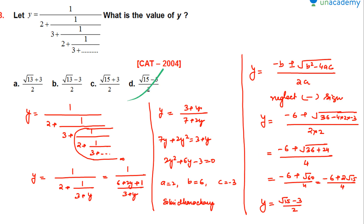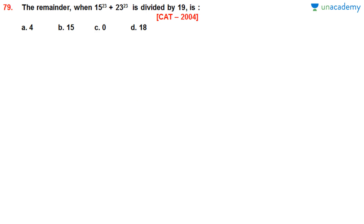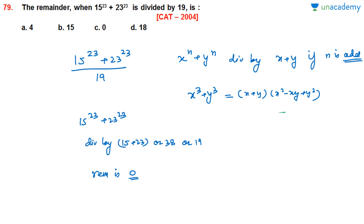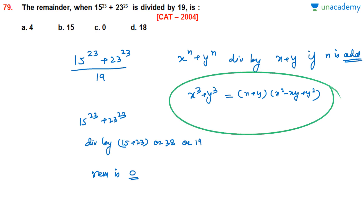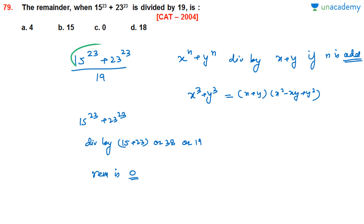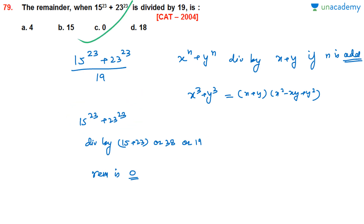Solution to Question 79: The remainder when 15^23 + 23^23 is divided by 19. We use the identity: x^n + y^n is divisible by (x + y) when n is odd. You can recall this from the formula x³ + y³ = (x+y)(x² - xy + y²), which shows odd powers contain the factor (x+y). Here, 15^23 + 23^23 has odd power 23, so it is divisible by 15 + 23 = 38 = 2 × 19. Therefore the remainder when divided by 19 is 0. Answer is option C.